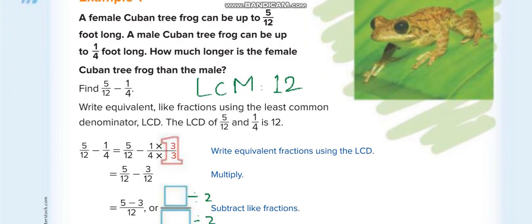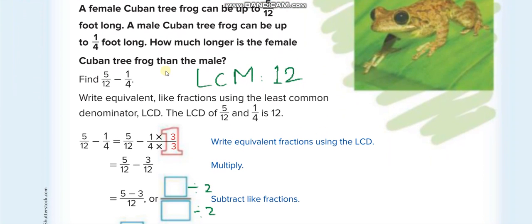When you have different denominators, like 12 and 4, these are unlike fractions. To subtract them, we first make the denominators the same. To do that, we find the LCM — least common multiple — of the denominators. We also call it the LCD, least common denominator, because we are finding it for the denominators.